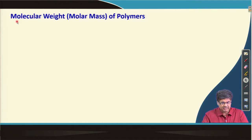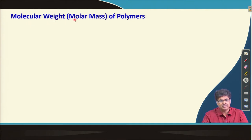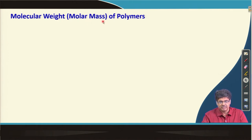A note on terminology: molecular weight is also simultaneously referred to as molar mass. We generally do not give a unit for molecular weight, but molar mass is expressed as grams per mole. Molar mass is probably the more accurate way of expressing molecular weights of any compound including polymers, but generally polymers are expressed as molecular weight without any unit.